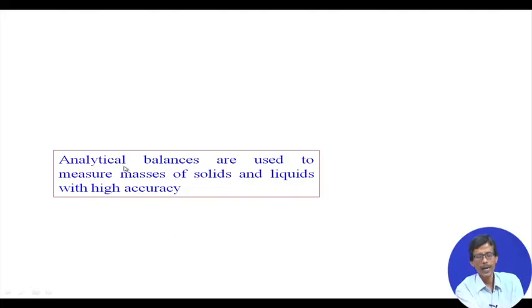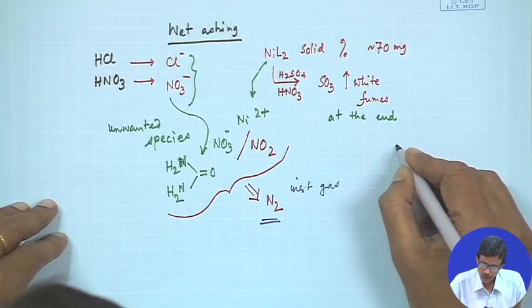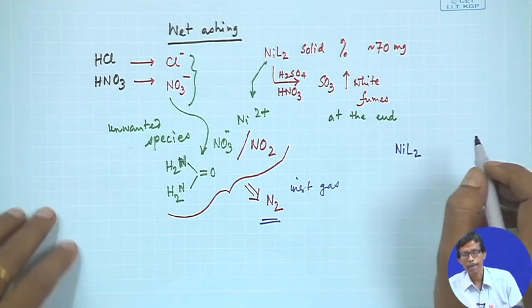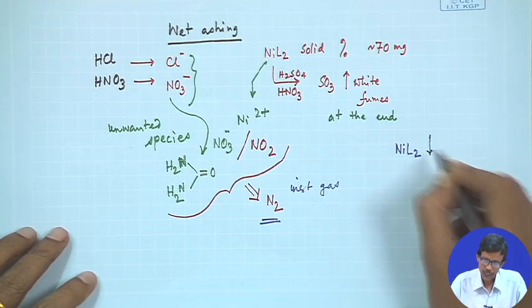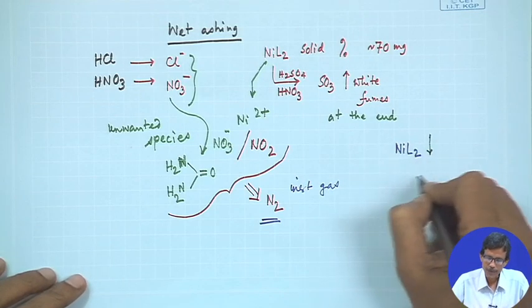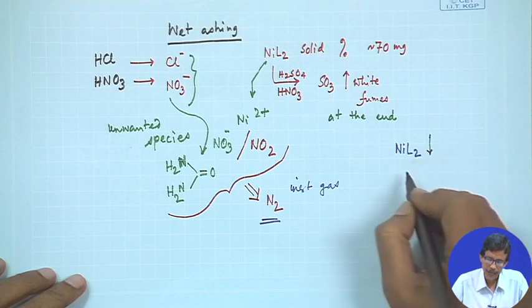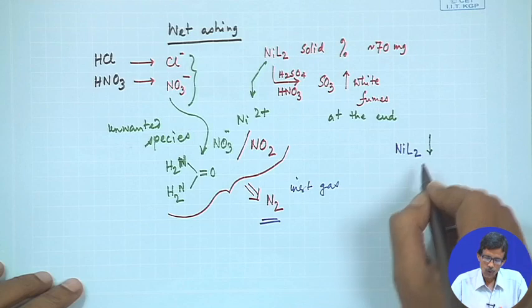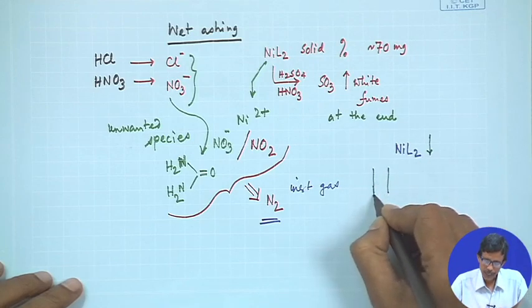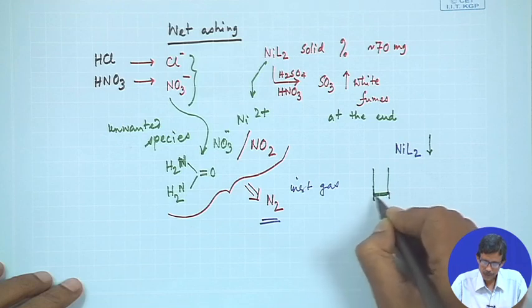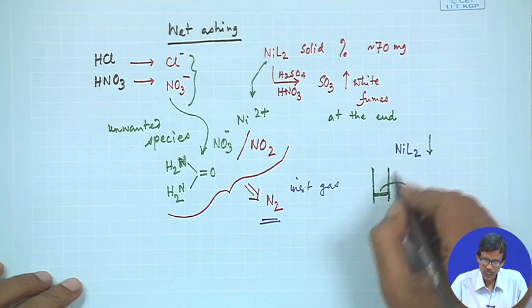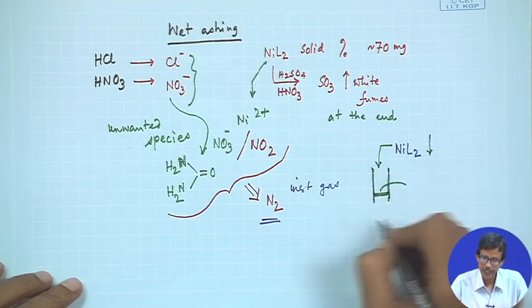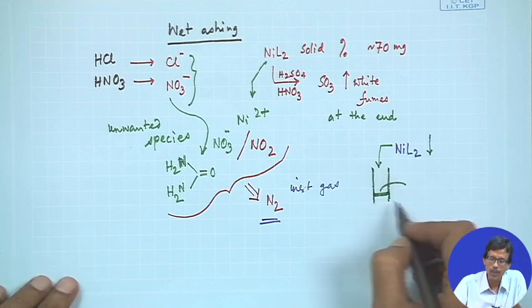How we do this analytical thing is that we require an analytical balance. Just now what we are talking about — the NiL2 formation — we can take the same example: Ni DMG is forming in solution as the red-pink precipitate. We can filter it out on filter paper and dry it in an air oven. We filter it in a Gooch crucible, which has a glass filtering bed through which the solution of nickel DMG can be filtered out.